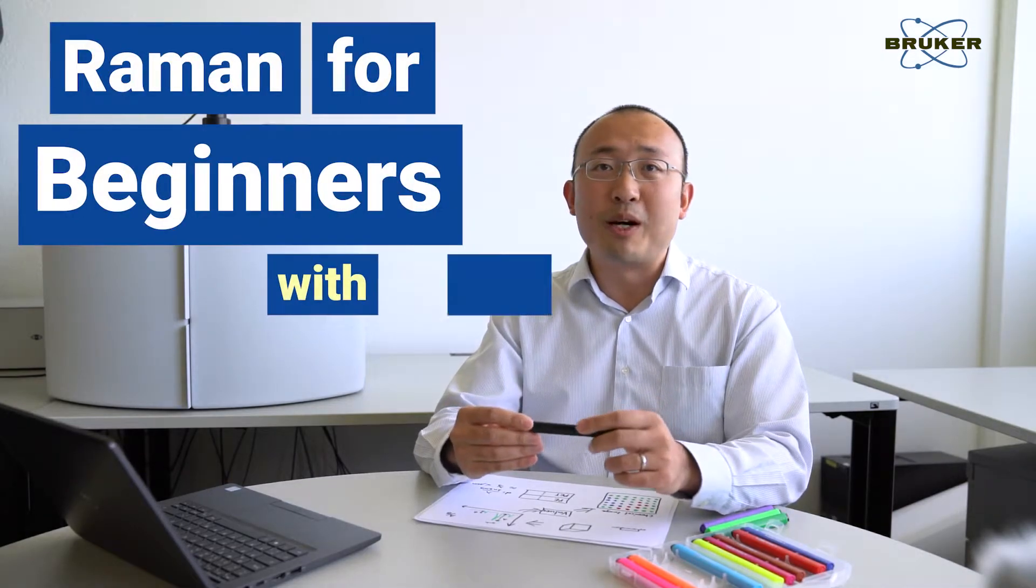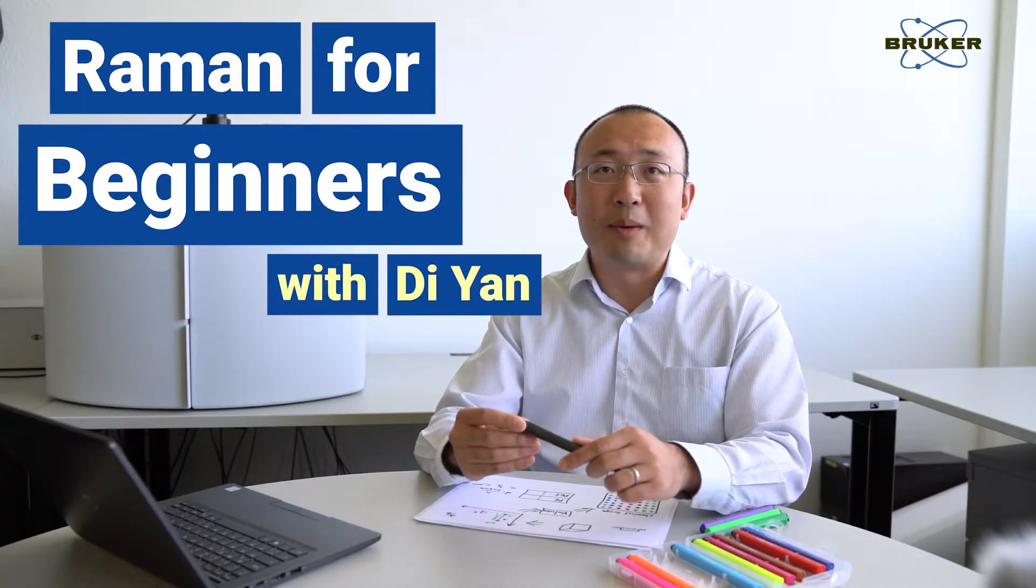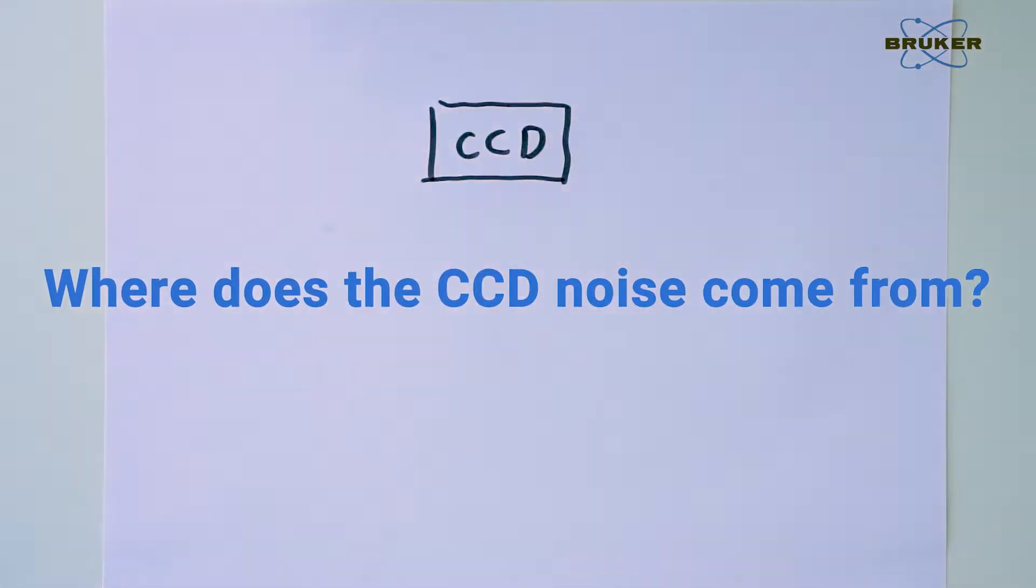In this and next video, we learn about the signal and noise of Raman spectrum. For this, we must understand where the noise comes from in a CCD.